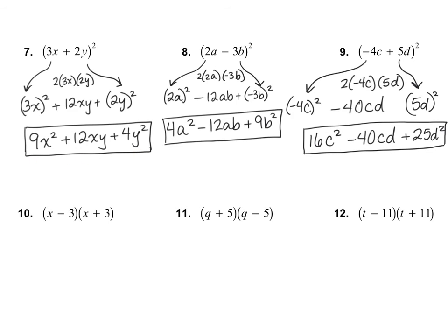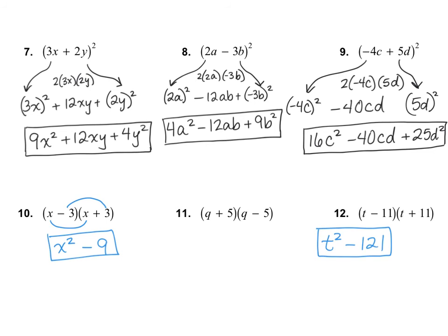Here's what I got for numbers 7 and 8 — please check your answers and see if you can find any mistakes. For numbers 10, 11, and 12, we're moving on to the sum and difference pattern. Remember, multiplying the outer terms gives 3x and the inner terms give negative 3x — they cancel out. So what we're left with is just the first terms multiplied together, which is x squared, and the last terms multiplied together, which is negative 9 — so that's the answer for number 10. For number 12: t times t is t squared, and 11 times 11 is 121, so it would be t squared minus 121. Go ahead and do number 11 on your own — I got q squared minus 25.